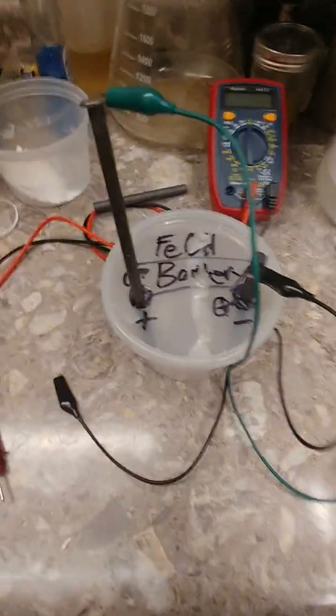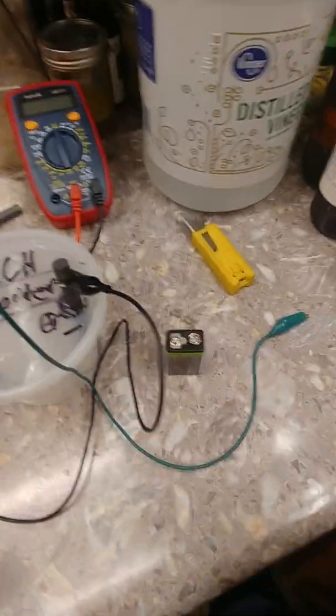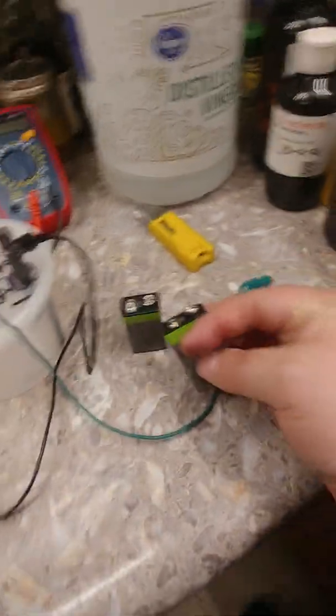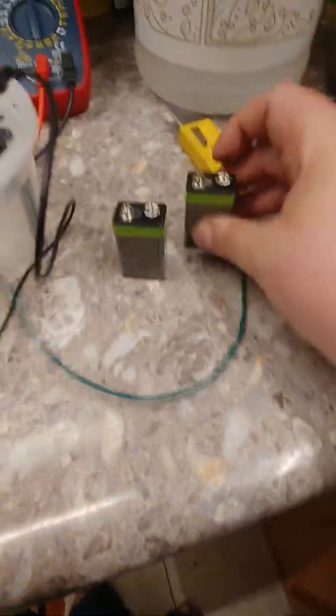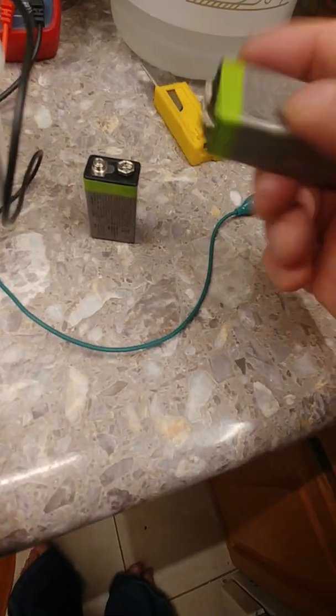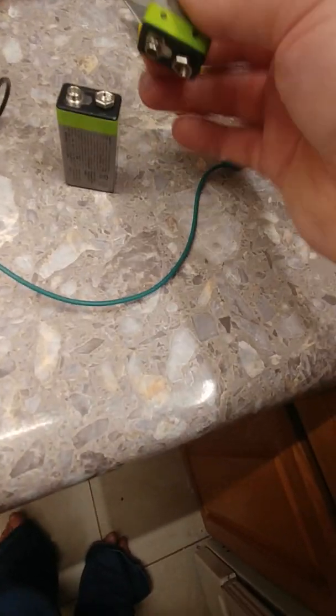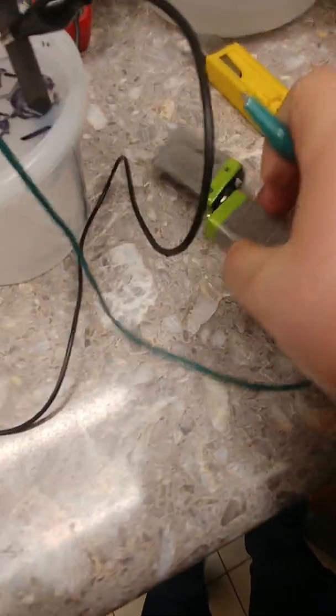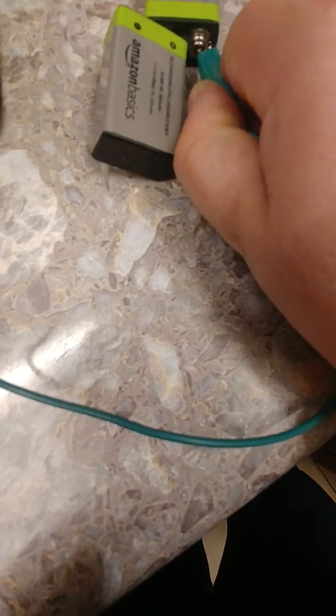Okay, so I've got two rechargeable nine volt batteries. I'm gonna hook them up in series which they have this nice little clips that make them good for doing that. So we're gonna hook up the positive to the nail and the negative to the graphite, so the positive is the green and the negative is the black.